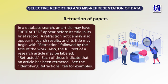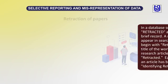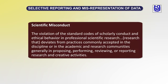See the example of identifying retractions. If you go to Oxford University Press or different institution sites, you will find different kinds of paper retractions. The consequence of scientific misconduct is violations of the standard codes of scholarly conduct and ethical behavior in professional scientific research.